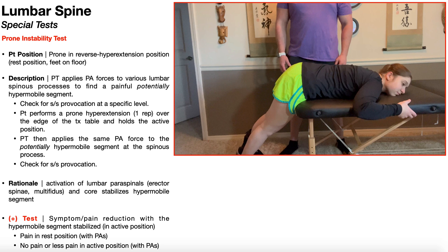In this video we're going to be talking about the prone instability test. Suppose you have a patient who presents with low back pain. One of the things you might do is try to classify them into a specific treatment group using the low back pain classification system. Some patients might be in the hypomobile category, some have a directional preference, maybe a radiculopathy, but some people have hypermobility or instability, and they would benefit from a stabilization treatment approach. One of the special tests in the test item cluster for that treatment group is the prone instability test.